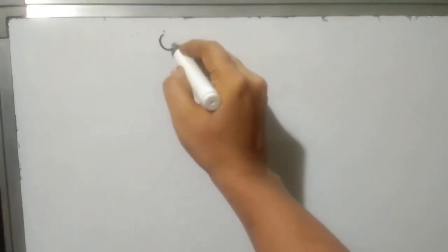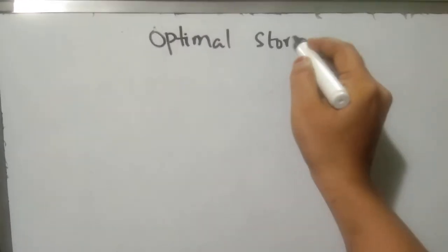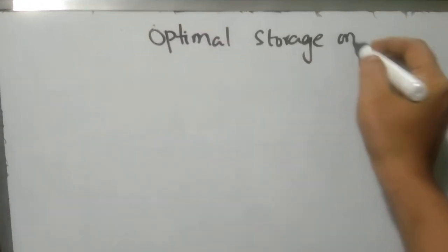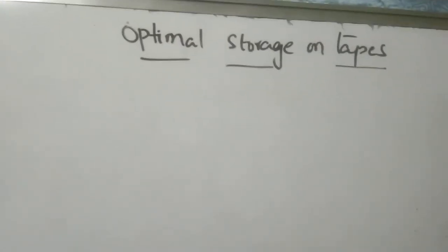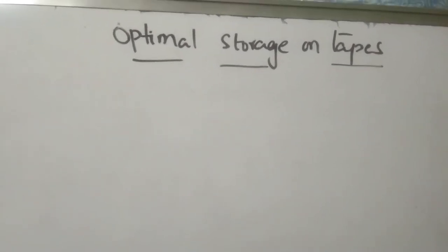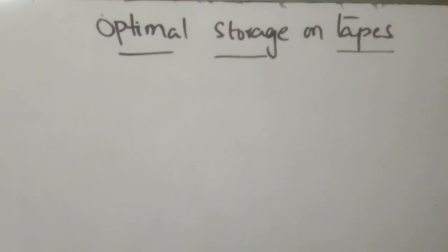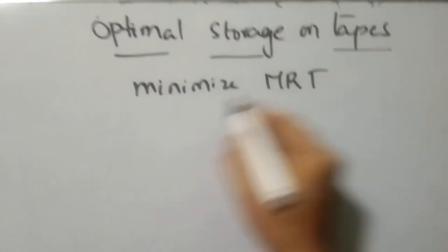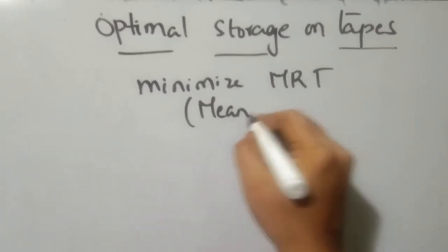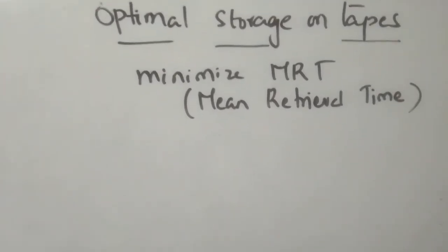Hello friends, welcome back to my channel. In this video I am going to explain optimal storage on tapes. This is also one more problem in the greedy approach. The main objective of this problem is to minimize MRT, that means mean retrieval time. You should minimize mean retrieval time — that is the objective of this particular problem.